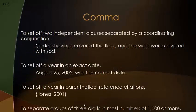Another use of commas is to set off two independent clauses separated by a coordinating conjunction. For example, 'Cedar shavings covered the floor' and 'The walls were covered with sod' are two complete sentences. Since we're using the coordinating conjunction 'and' to join them, we set the clauses off with a comma: 'Cedar shavings covered the floor, and the walls were covered with sod.' That's when you put a comma before 'and' in the middle of a sentence like that.